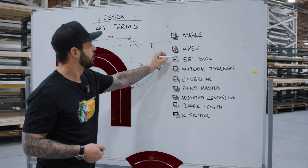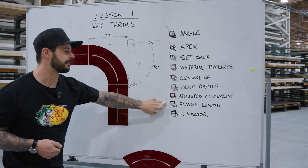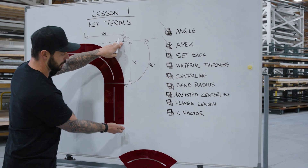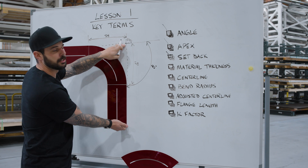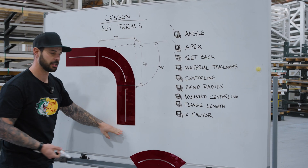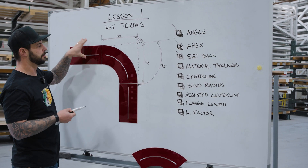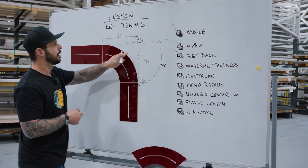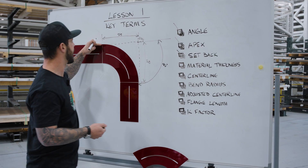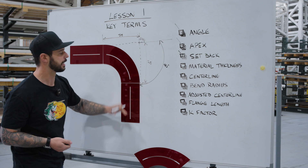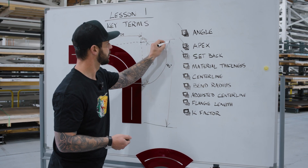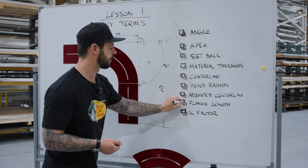From that setback, we're going to jump down to flange length. The apex to the end of your flange is your flange length. It's important to know we're not measuring from the inside of the flange to the outside — that's affected by material thickness and angle changes. The proper way to measure flange length is from the apex, or essentially from the outside of the flange, to the end. We'll label this FL for short.